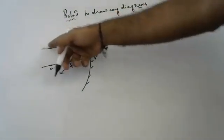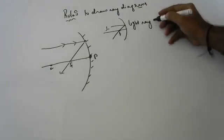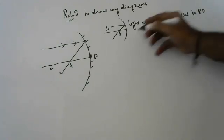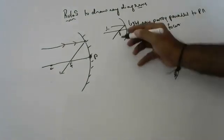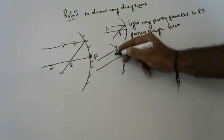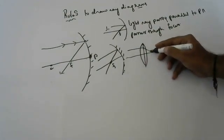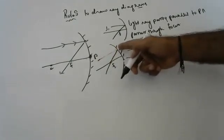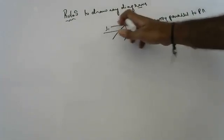So what is the first rule? Any light ray coming parallel to the principal axis compulsory goes to focus. Whether it is a mirror or a lens — if the light ray is coming parallel to the principal axis, it goes to focus. Light ray coming parallel passes through focus. This is the first rule.